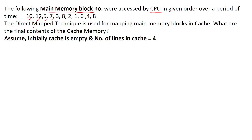The next information we are given is that the direct map technique is used to map the main memory blocks into cache memory. We have to tell what are the final contents of the cache memory. The last information given is that our cache is empty initially and the number of lines in our cache is 4.